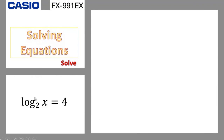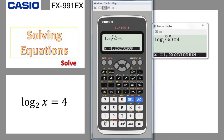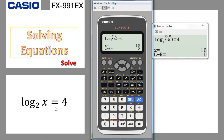Also, you can solve a logarithmic equation with a base. If we want to solve log base 2 of x equal to 4: clear the screen, write log base 2 — click the log base key — write 2, go up, put x, go outside, put alpha equal, add 4, go for shift calc, put any starting value like 0 or 1, press equal — you get 16. So with this type of logarithmic equation you get one solution.